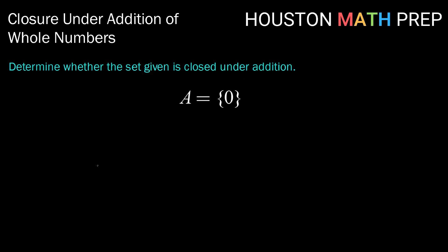So let's take a look at a super basic set. Let's determine if the set A equals just the number zero is closed under addition. Well, closure means if we take any number in the set, in this case zero, and we add it with any other number in the set, there's only one.